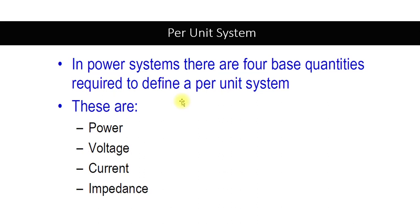Engineers figured out that this problem can be resolved by using the per unit system. In the per unit system, we take a certain benchmark or base quantity, and every quantity belonging to that group is benchmarked based on this quantity. In a power system, there are four base quantities required to define a per unit system.